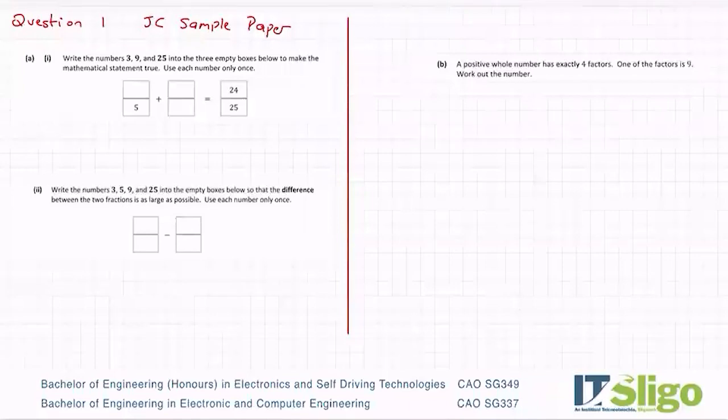Write the numbers 3, 9 and 25 into the three empty boxes below to make the mathematical statement true. Use each number only once. So what that's saying is that I somehow have to fit 3, 9 and 25 into these in any order at all. I have to put the three numbers in, but it has to equal 24 over 25.